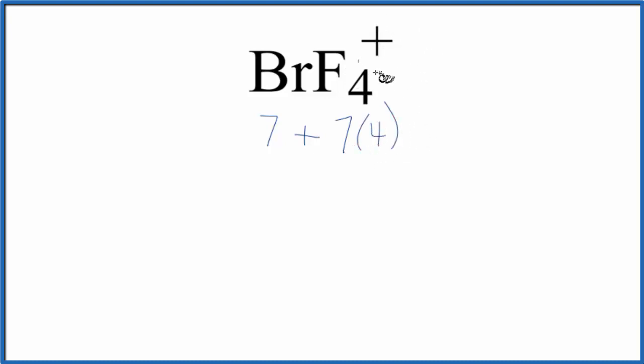And then the positive charge up here, that means we've lost a valence electron. So we're going to subtract 1 from that. So we have 35 minus 1, 34 total valence electrons for the BrF4+ Lewis structure.